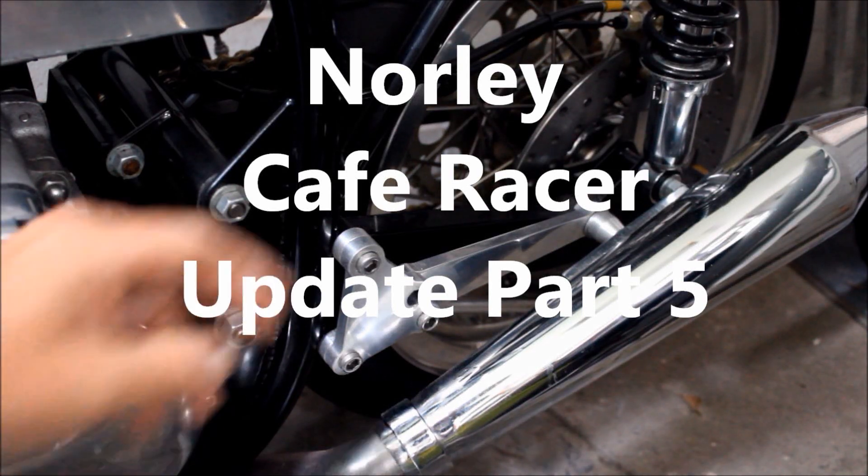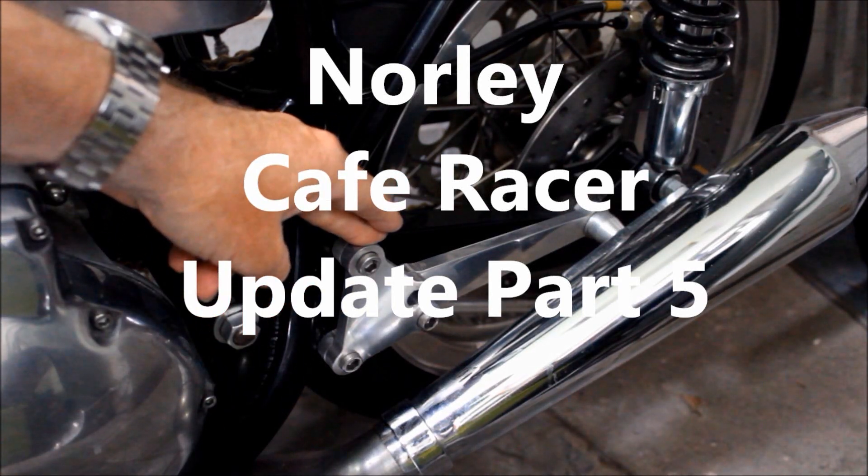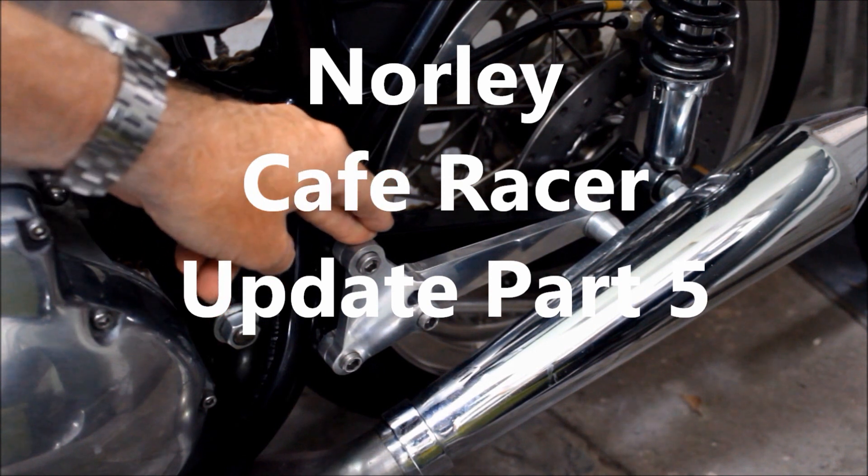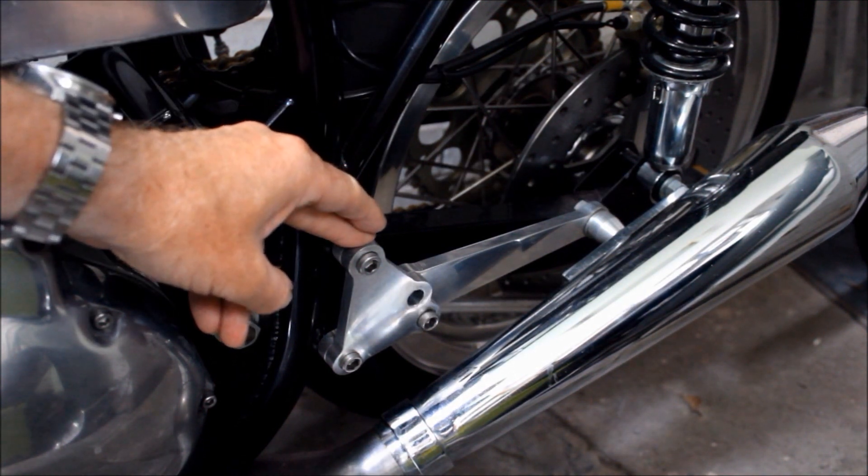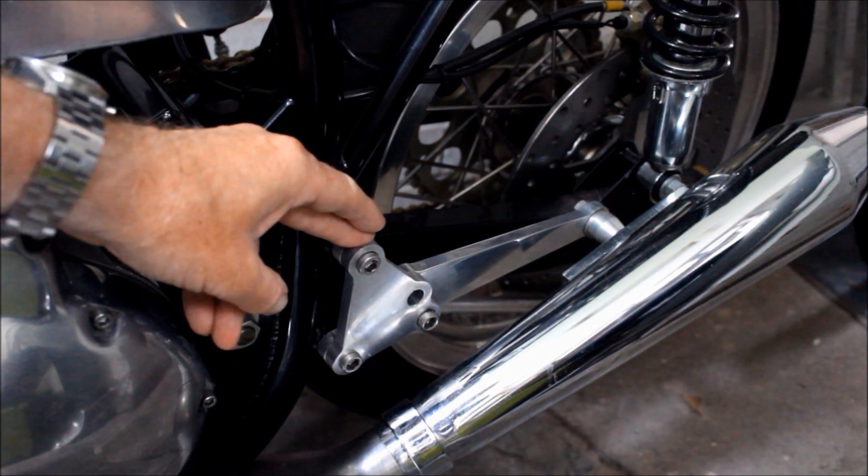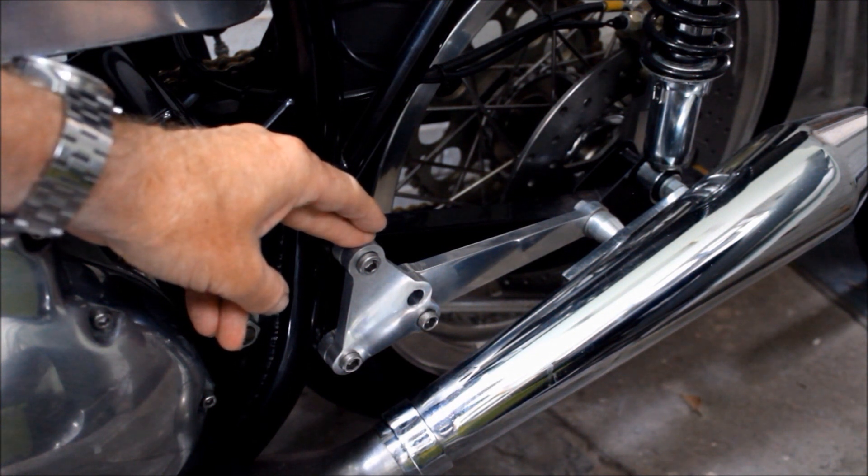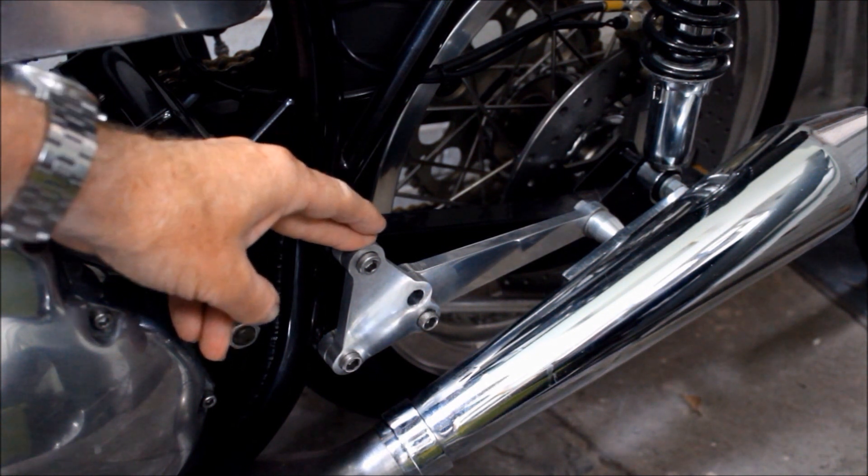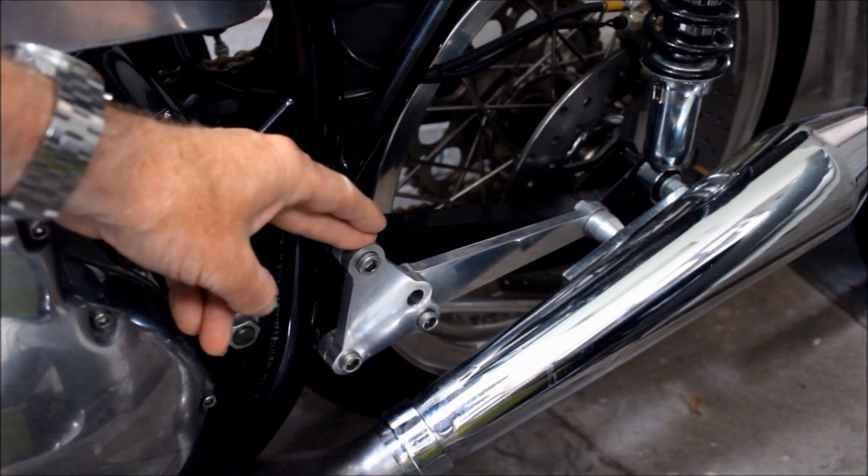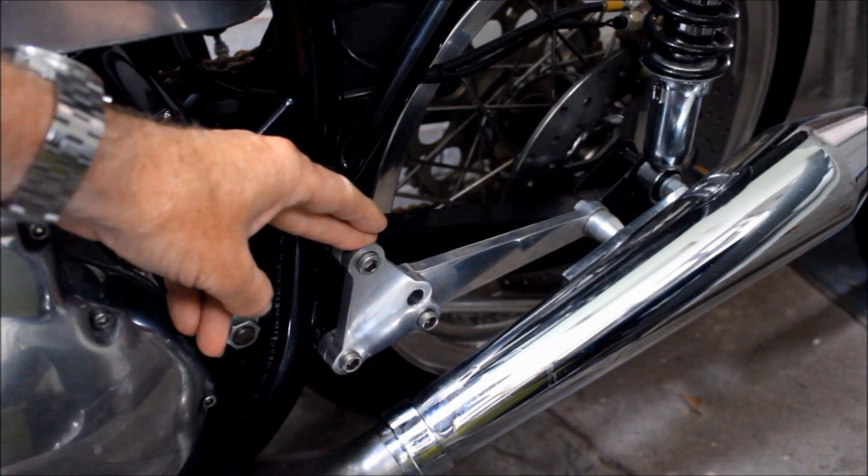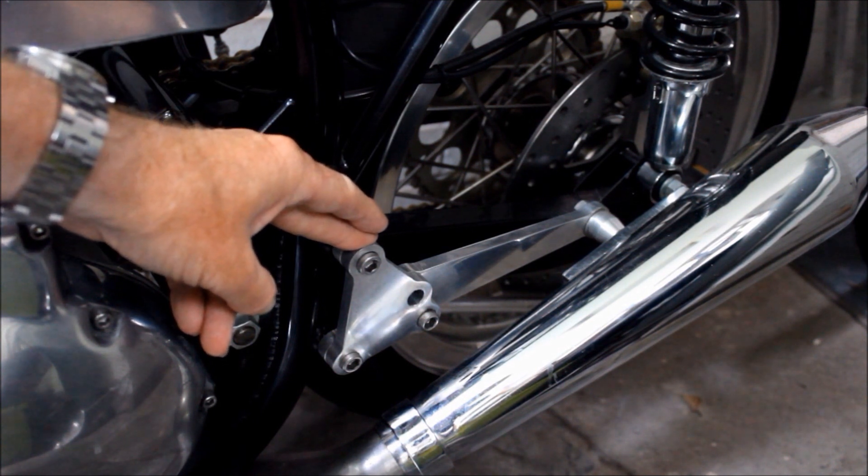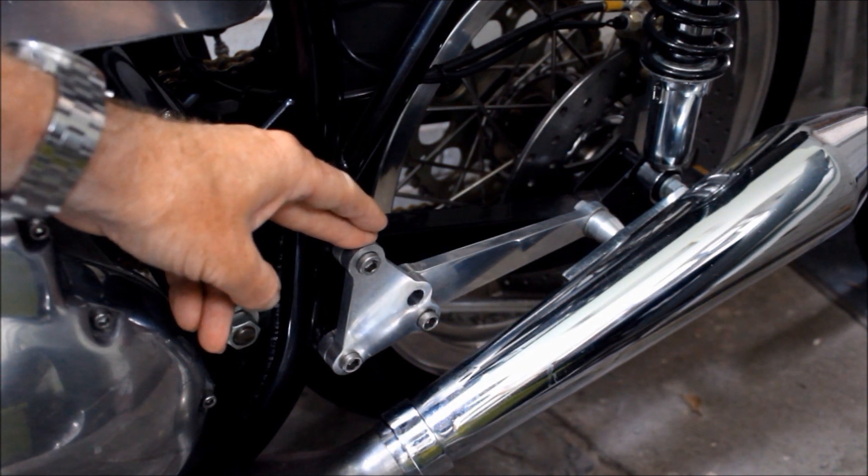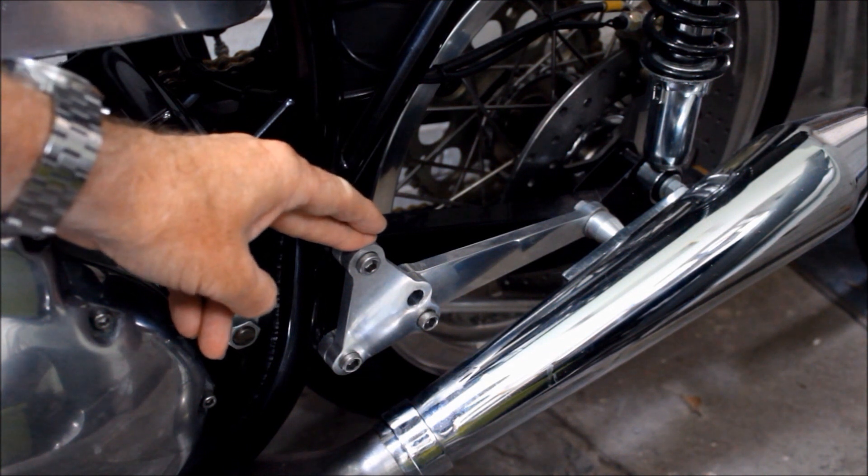Hello again, here we see the mounts for the rear sets on my Norley. I've removed the levers because I want to make a replacement pair that suit the bike better than the modern ones that were on there originally. I've taken measurements from them and come up with a new design, so in this episode we'll go through the whole process of making those levers.